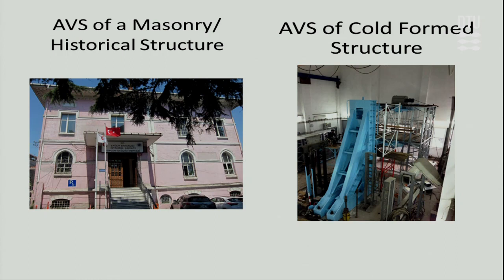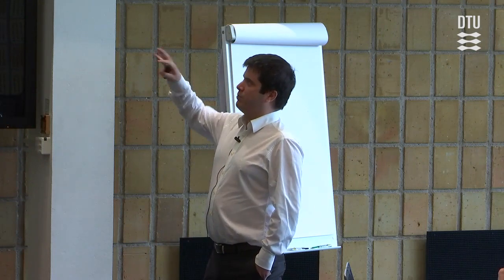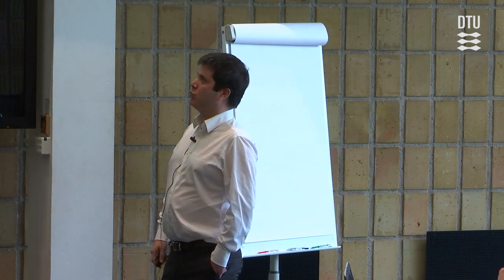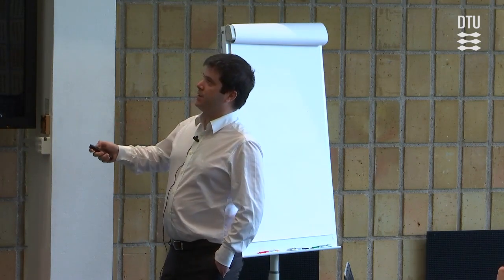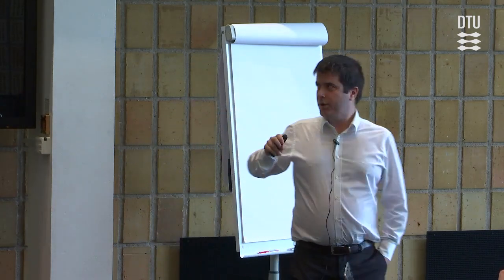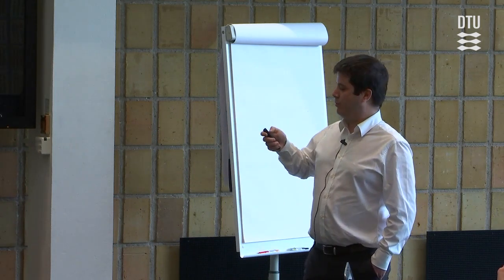At each damage state we collected ambient vibration data and tried to identify the damage level. Recent work includes a wind turbine on the Boğaziçi University campus near the Black Sea — a one-megawatt turbine with acceleration sensors on the tower, dynamic strain gauges on special regions, and sensors on the piles.